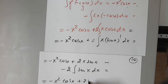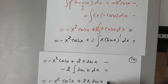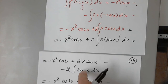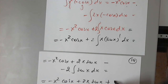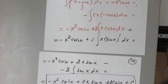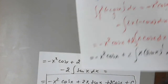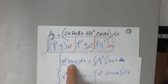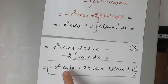Negative x squared cosine x plus 2x sine x — the integral of sine x is negative cosine x, so that becomes plus 2 cosine x, plus constant C. You didn't expect this from what looked very nice and neat: x squared sine x. It's a lot of work. So we are integrating x squared sine x dx and we got three terms plus a constant.